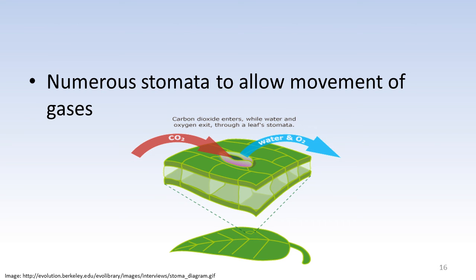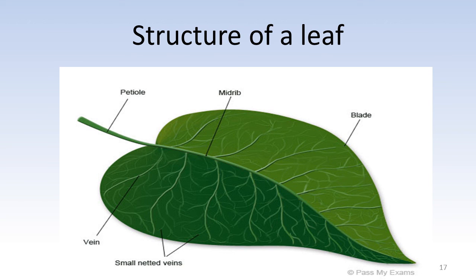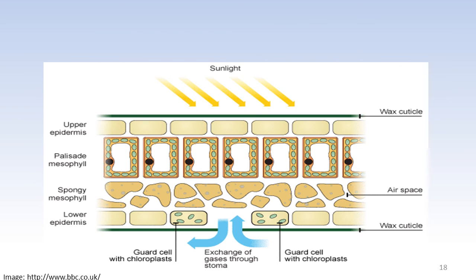You should be able to draw and label the external parts of a given leaf as shown in this image. It is also important that you learn to label the internal structures of the leaf.